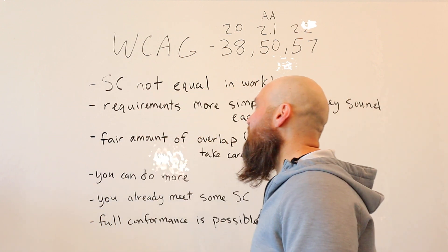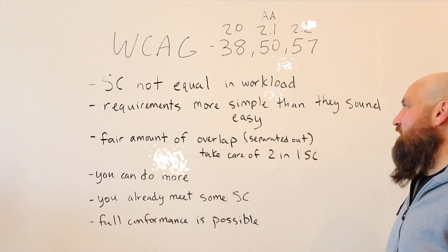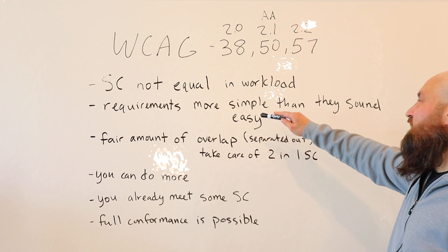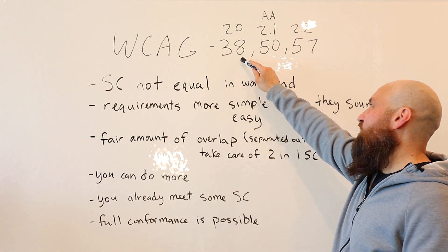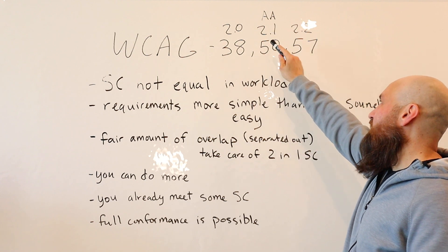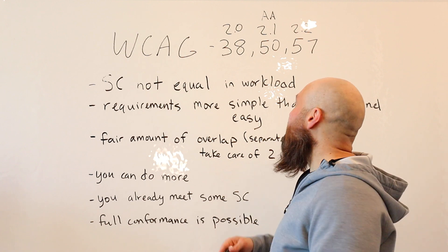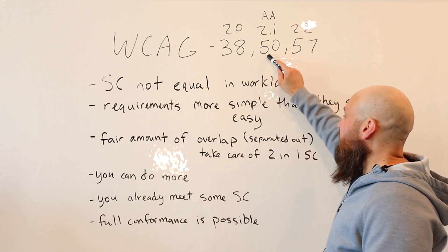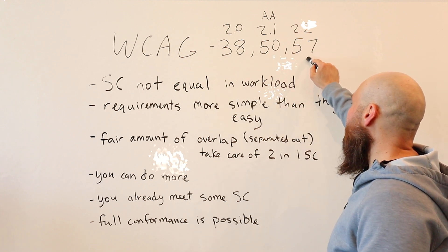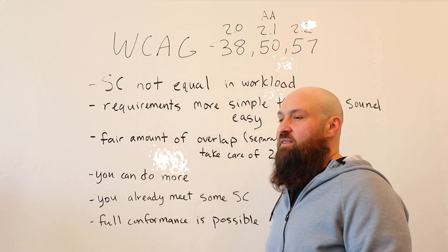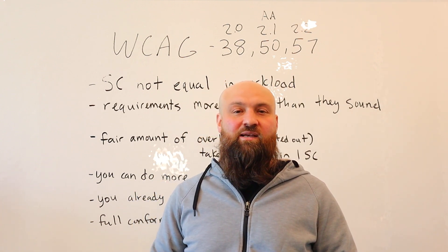So let's take a look at what you may not know about the Web Content Accessibility Guidelines. At the very top of the whiteboard, I have that there are 38 success criteria under version 2.0, conformance level AA, which is typically the conformance level that we are looking at. There are 56 success criteria under 2.1 and 57 under 2.2. Think of these success criteria as things to do to make your website accessible.